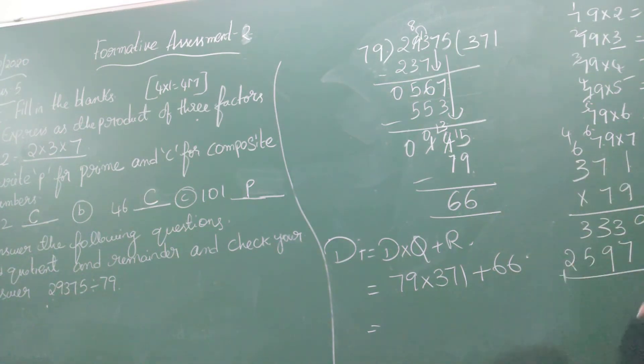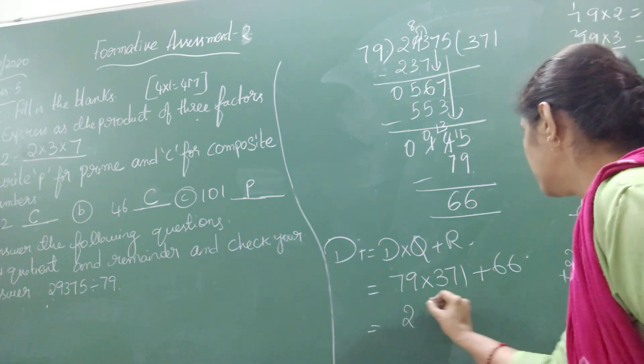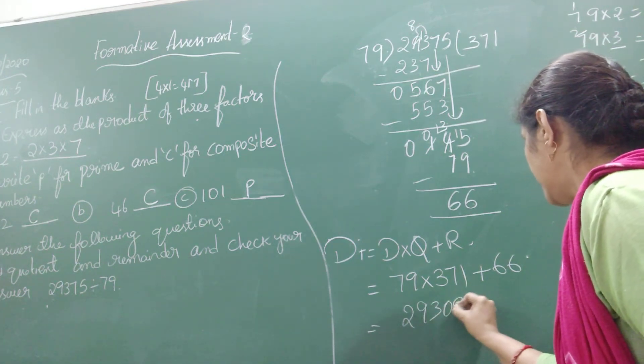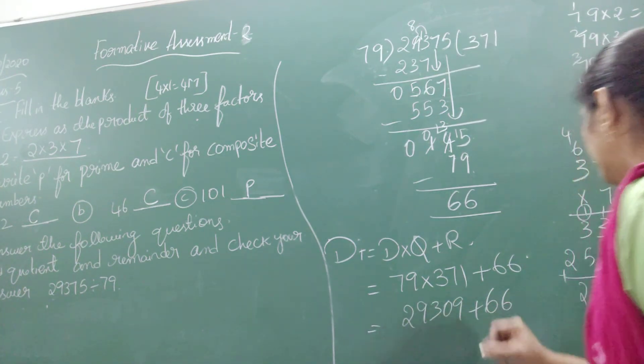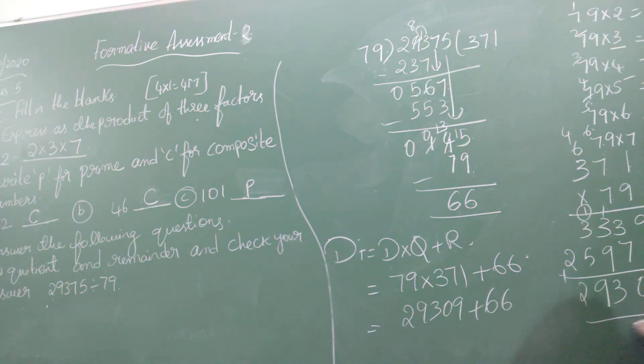Now add the numbers: 9, then 8 plus 7 is 15, so 5 and carry 1. 1 plus 3 plus 3 is 7, then 4 plus 9 is 13, so 3 and carry 1. 1 plus 3 is 4, 4 plus 5 is 9, and 2 as it is. So we get 29,309 plus 66.